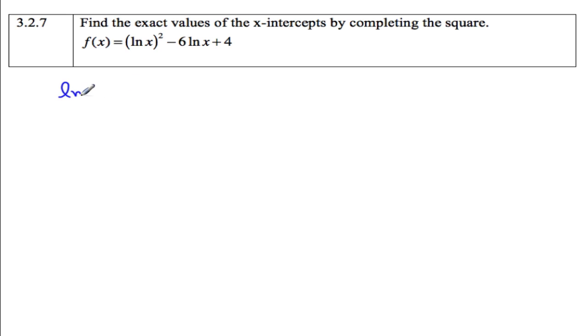So what I'm going to do is I'm just going to take ln(x) and set it equal to a right from the start. So we're left with y equals a squared minus 6a plus 4. This will look like something you're a little bit more familiar with.